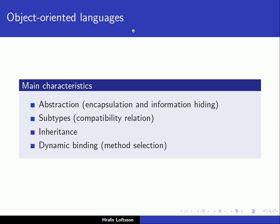Hello again. We were discussing the main characteristics of Object-Oriented Languages and the first point was abstraction, and we talked about the class. The class is really the abstraction mechanism used in Object-Oriented Languages. The next items to talk about are subtypes, inheritance, and dynamic binding.